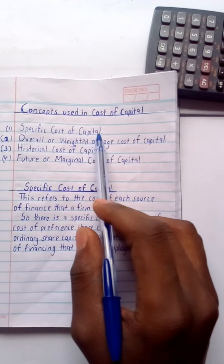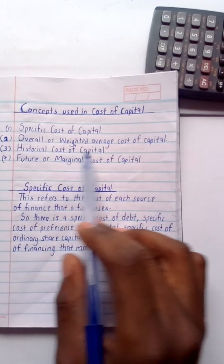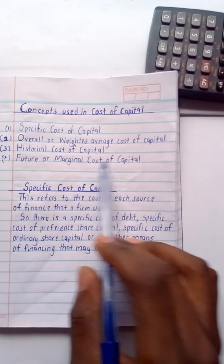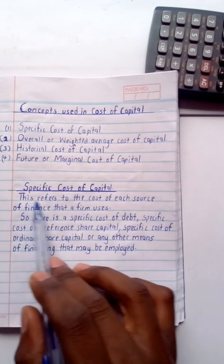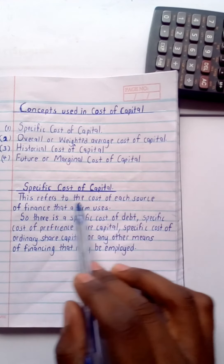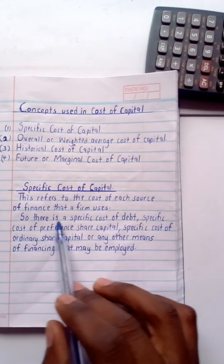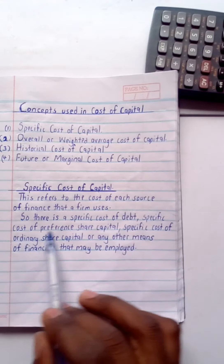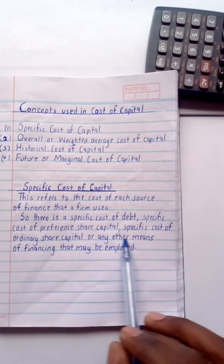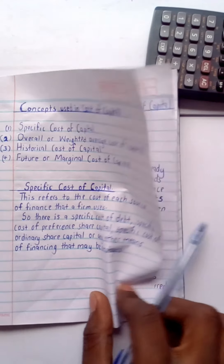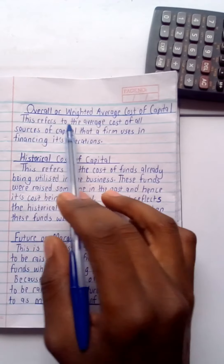So here we are having: specific cost of capital, overall or weighted average cost of capital, historical cost of capital, future or marginal cost of capital. With specific cost of capital, this refers to the cost of each source of finance that a firm uses. There is a specific cost of debt, specific cost of preference share capital, specific cost of ordinary share capital, or any other means of financing that may be employed.